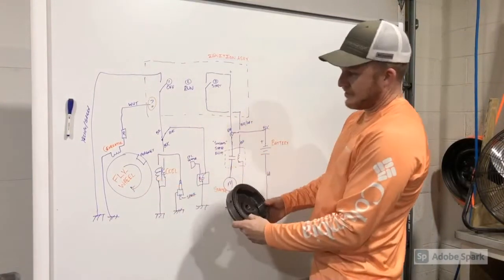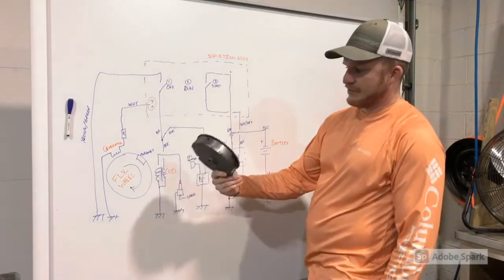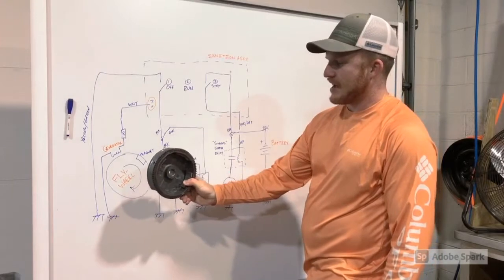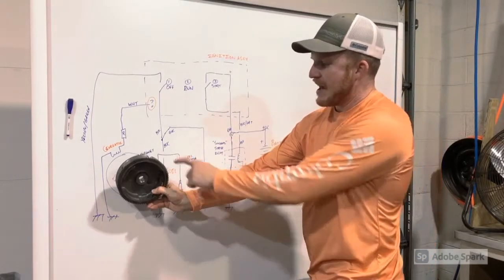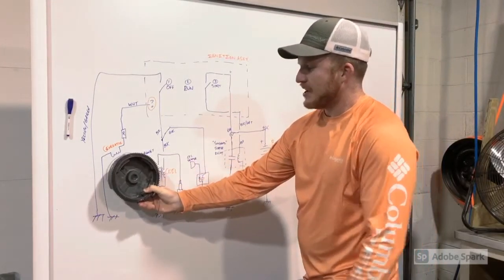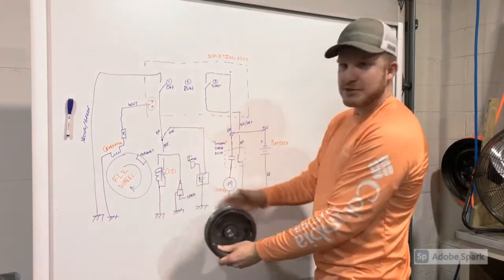So let's start here at the flywheel. The flywheel is a simple metal casting that's attached to the engine block and it has a magnet on it. So that flywheel rotates, the magnet passes the coil, and it generates a spark.